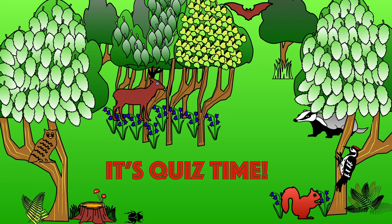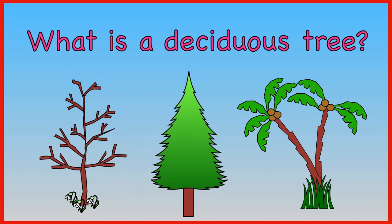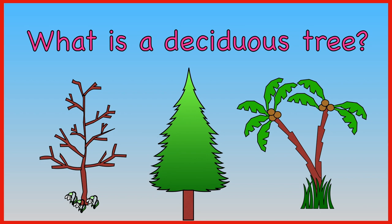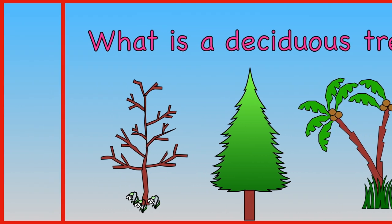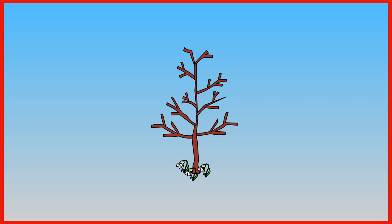We've now finished learning all about forests and woods. But let's do the quiz to see how much we can remember. What is a deciduous tree? A tree which loses its leaves? A tree that keeps its needles or leaves? A tree with delicious fruits? A deciduous tree is a tree that loses its leaves.